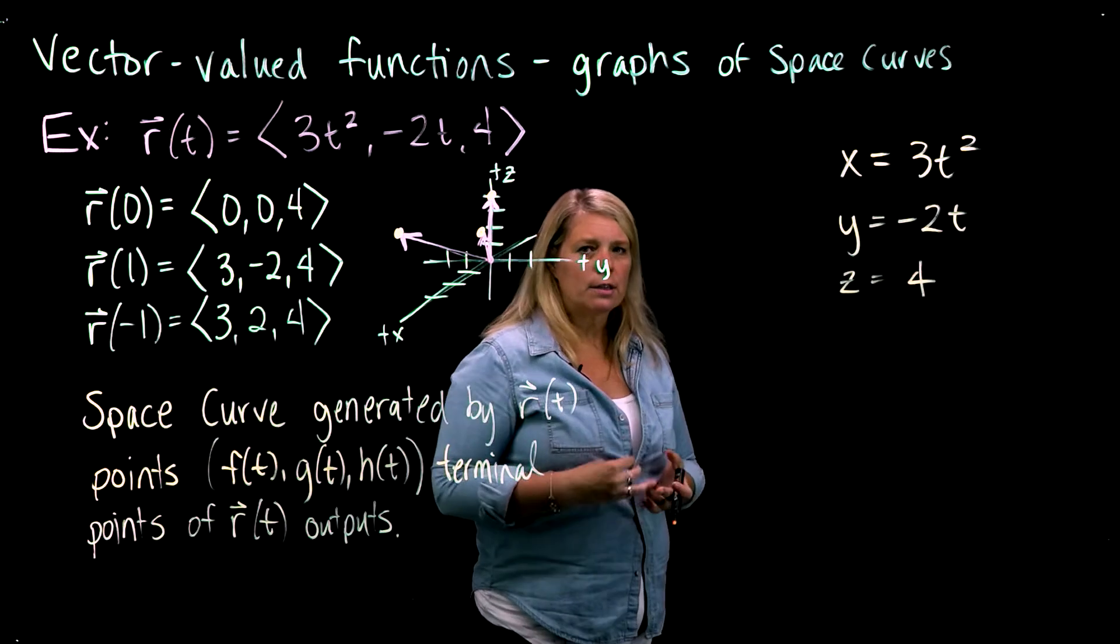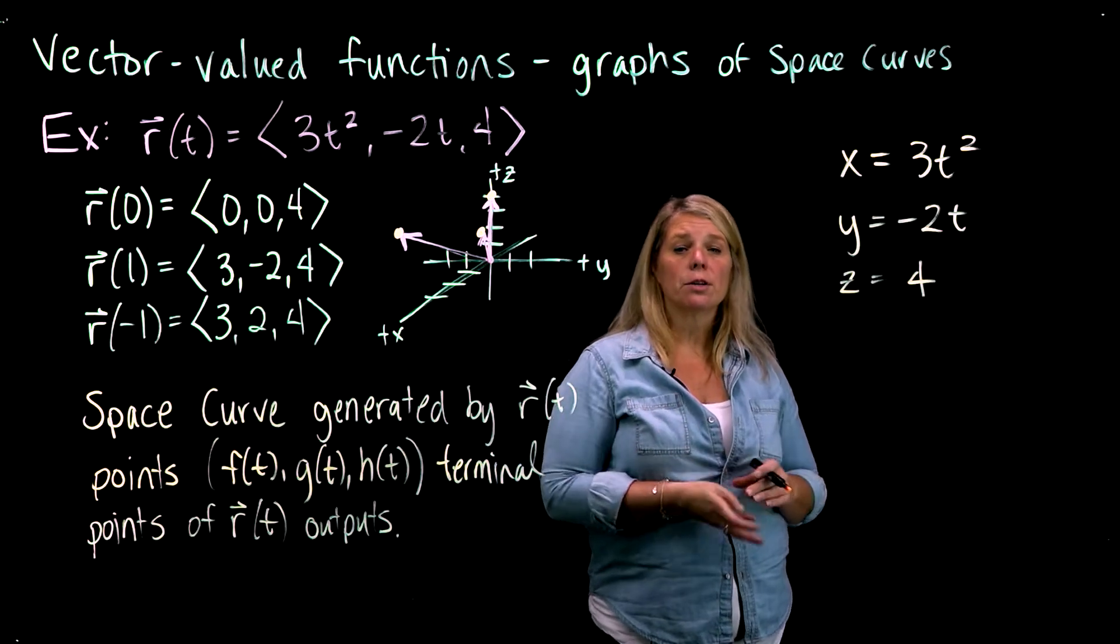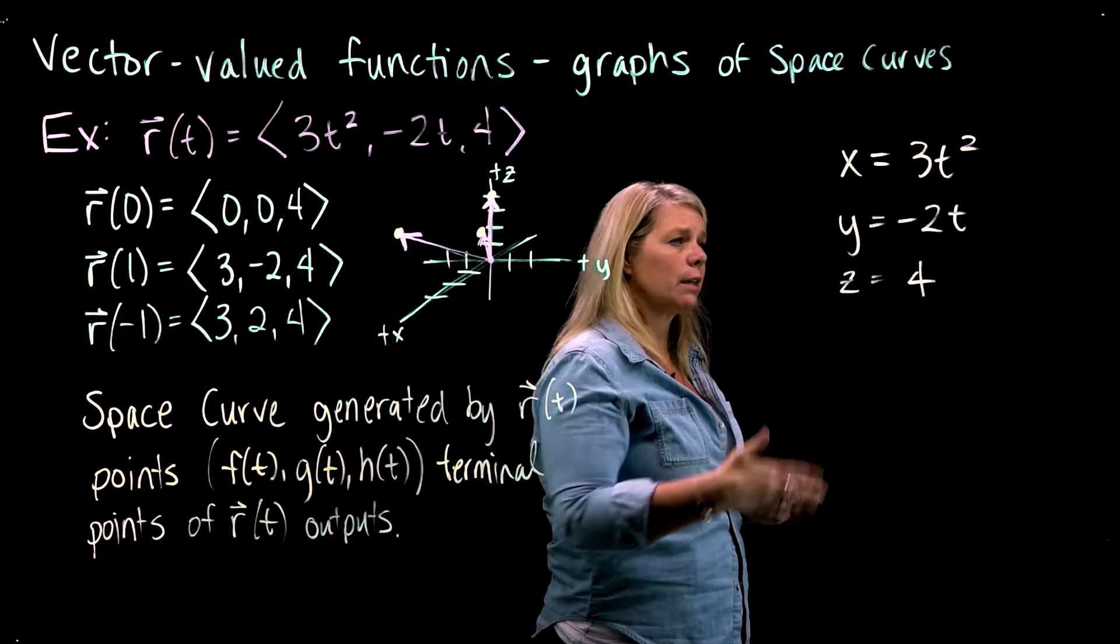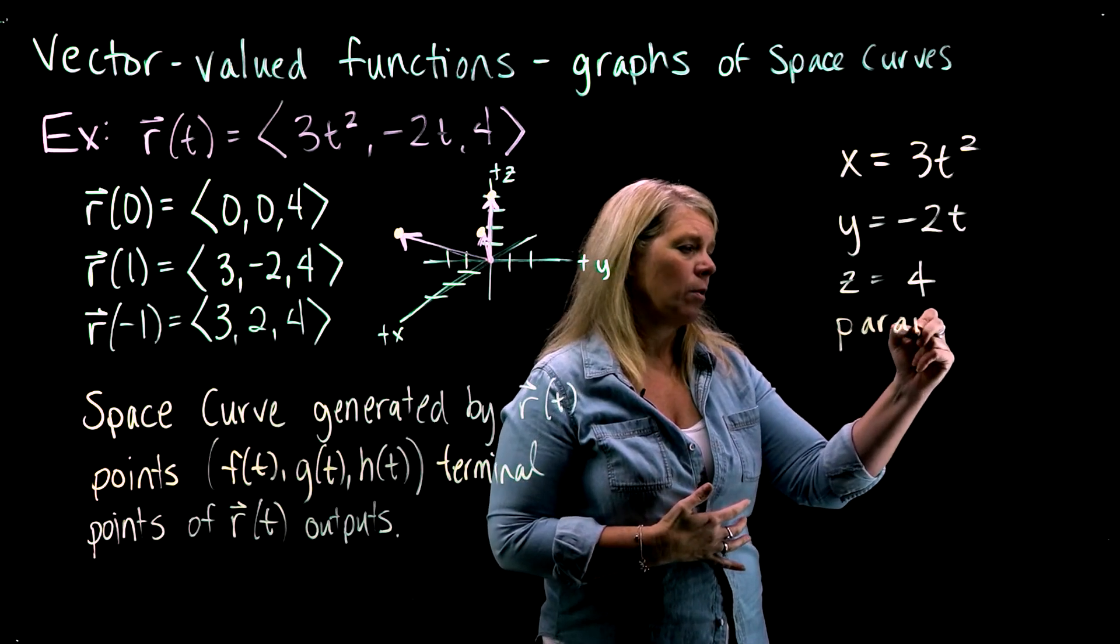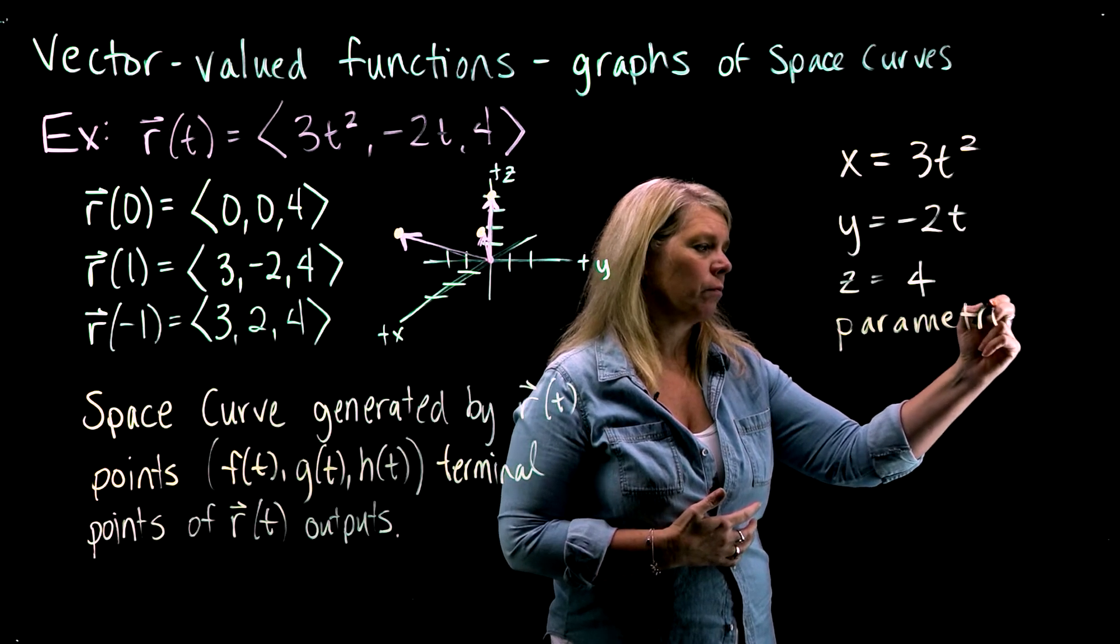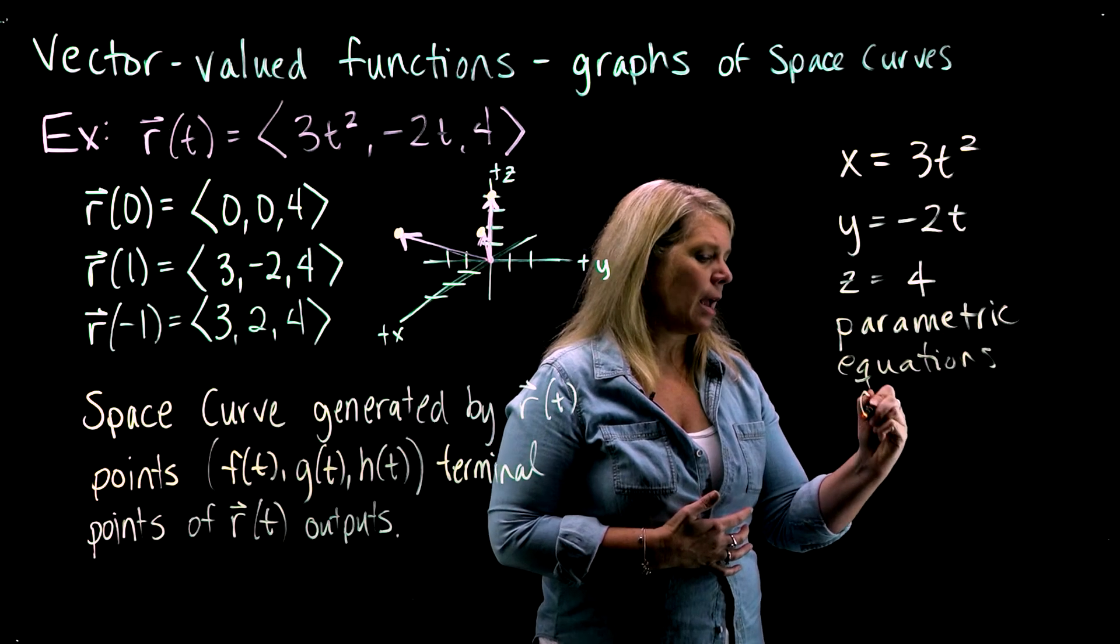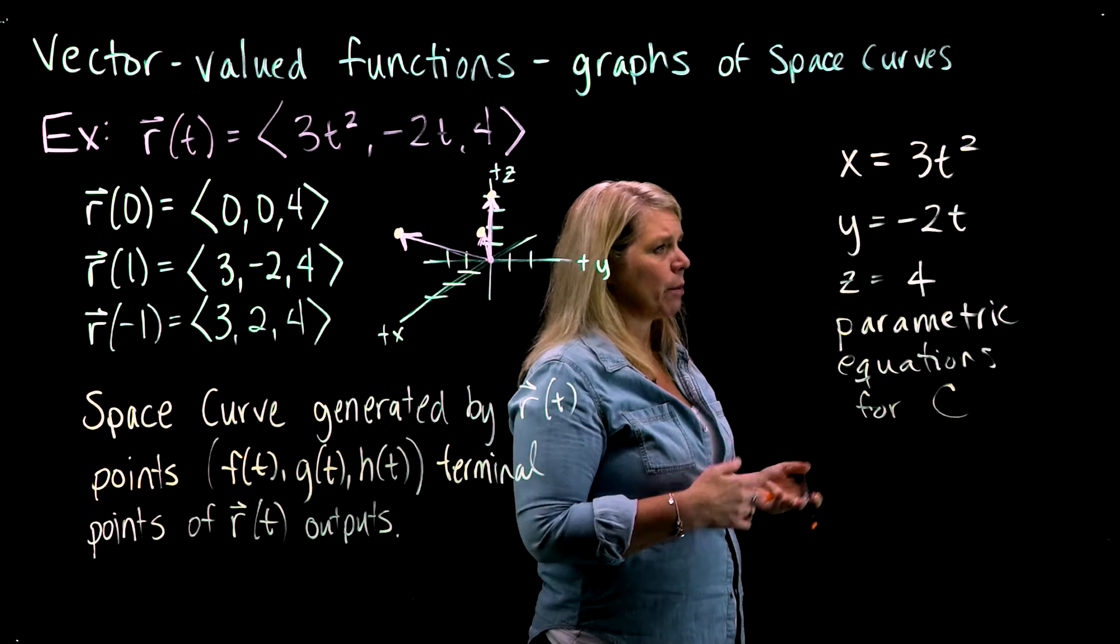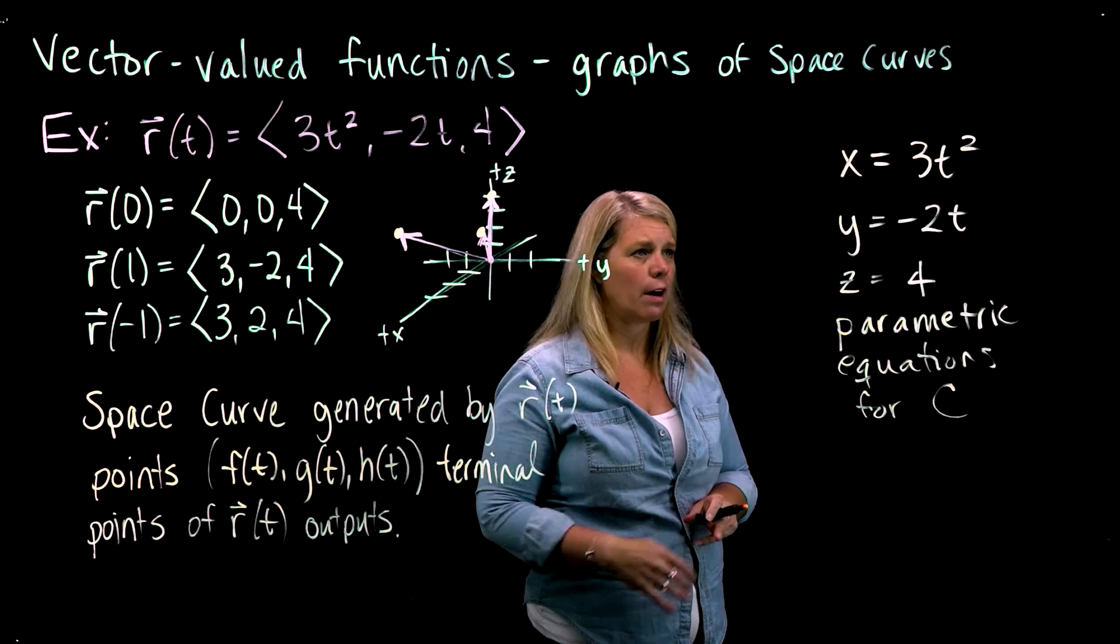And when you look at this, you should say, oh, that looks like parametric equations. We did parametric equations of lines in R3 in the last chapter, and so what this generates really is parametric equations for this space curve. And sometimes we denote that space curve as C in uppercase C, space curve C that's generated by this vector-valued function.